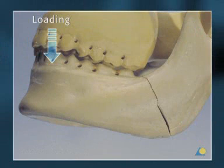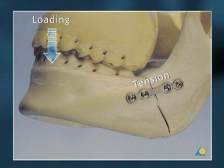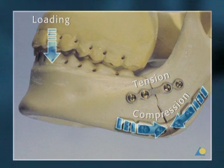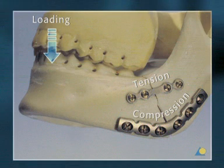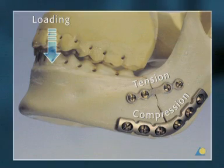Loading across a mandible angle fracture leads to tensional forces at the upper border, which are borne by a 2.0 mandible mini plate, and compressive forces at the lower border, which can be borne by the 2.4 universal fracture plate and the fracture surfaces. Therefore, load sharing takes place when the load across the fracture is shared between the fixation system and the fracture surfaces.